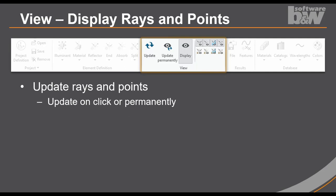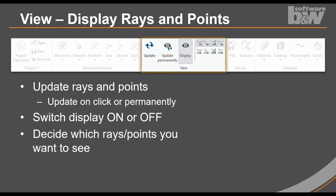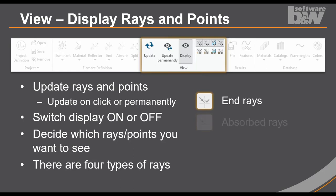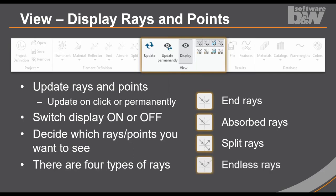The next group is the view group. In this group, you can start the rate calculation by pressing the update button. Or you can decide if you want to update permanently, which means that if the CREO model is regenerated, also the calculation is updated. You can switch the display of the rays and points on and off. And you can decide which kind of ray and point you want to see. At the moment, there are four types of rays. We have the end rays, which is on an end surface. The absorb rays, which are absorbed on a housing or something like this. We have a splitted rays. And we have rays with no end that are called endless rays.